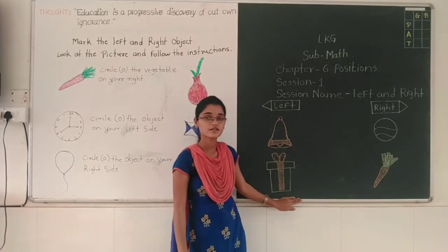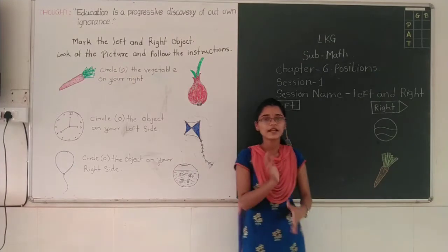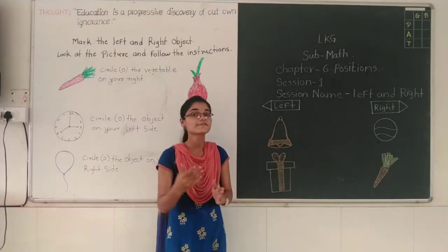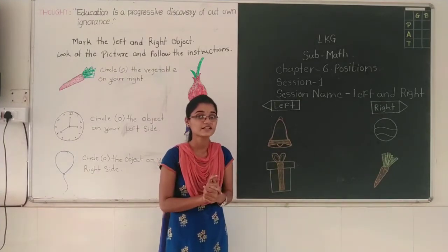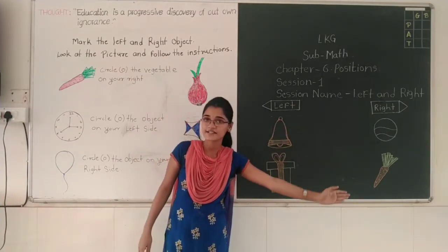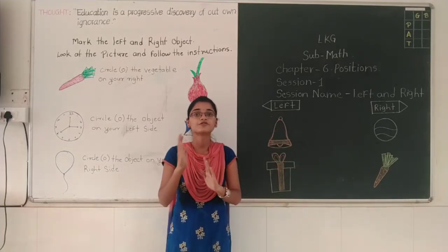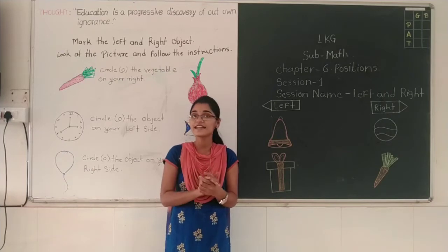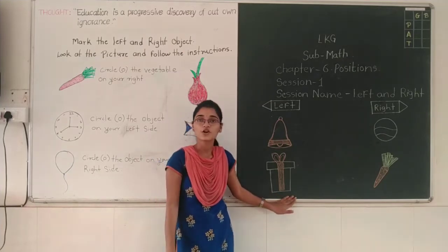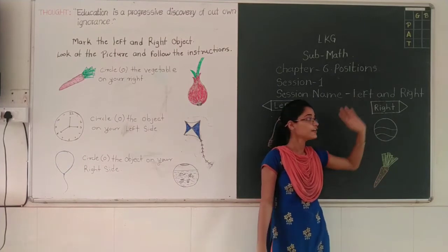Now look at the second picture. Here I have drawn one gift box and one carrot. Tell me which picture I have drawn on your left side. This is your left side and this is your right side. Yes — gift box. Gift box I have drawn on your left side. And the picture of carrot I have drawn on your right side.